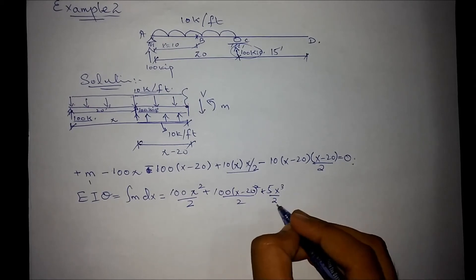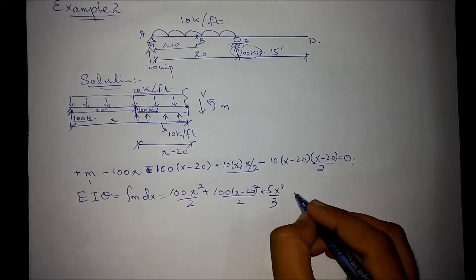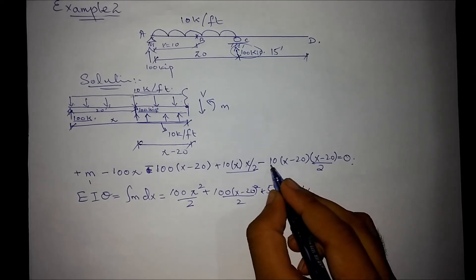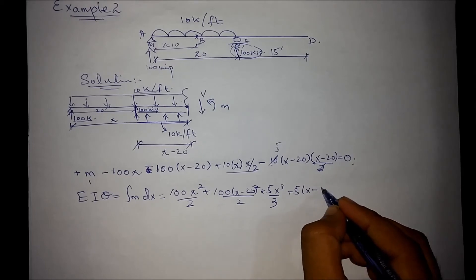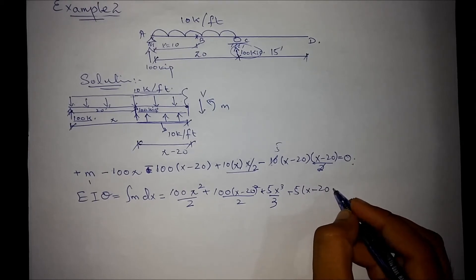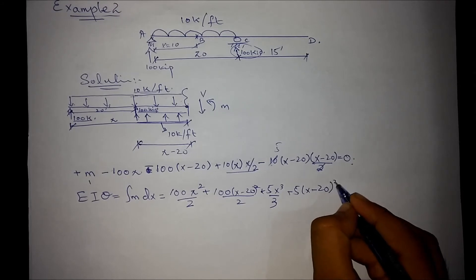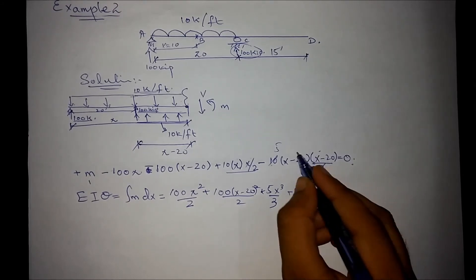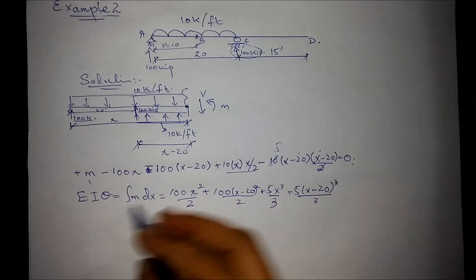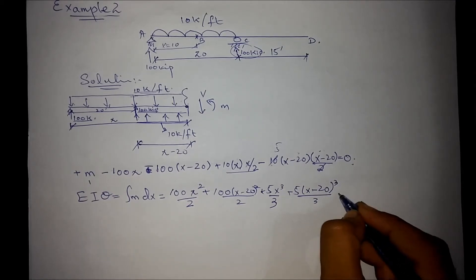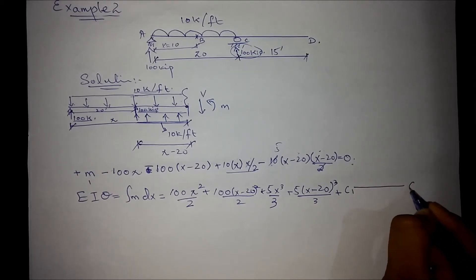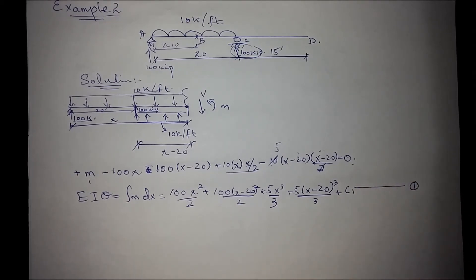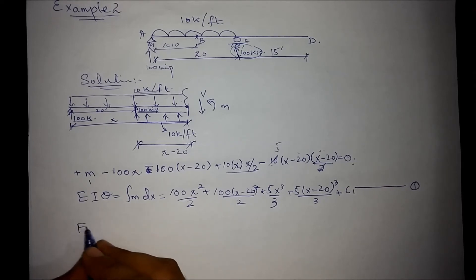That is x squared becomes x cubed over 3 minus 5 times x minus 20 cubed over 3. And this will multiply and it is already in square form so after integration it will become cube plus c1. Let's call this as equation number 1.